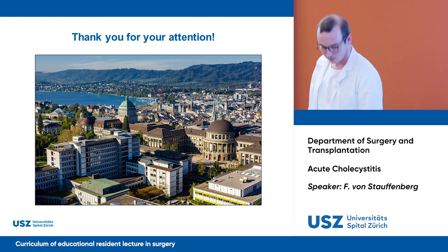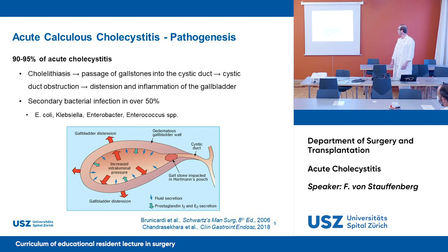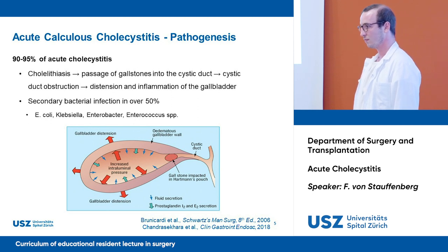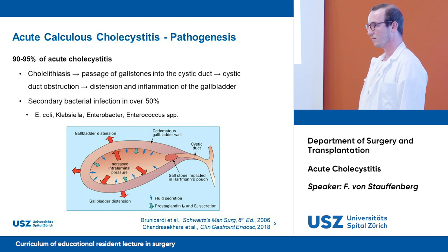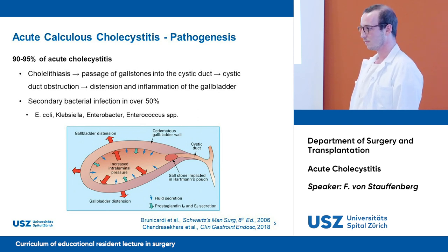The disease that must be absolutely differentiated from acute cholecystitis — because the treatment is the exact opposite and failure to do so can lead to patient death — is cholangitis. In cholangitis, the cystic duct is open; usually the stone passes through and is blocked in the choledochus, causing infection with the Charcot triad you mentioned. For the young surgeon, this differentiation is always the first thing to remember: if you perform a cholecystectomy in a patient who actually has cholangitis, the patient may die, particularly without the right antibiotics.